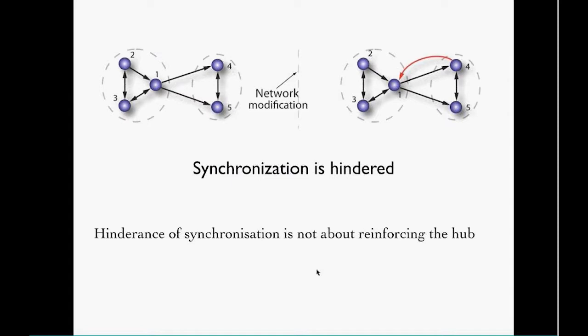When we first found this, we started chatting to people. The first thing they thought was this is happening because I'm reinforcing the hub—basically linking to the hub. We tried to prove this but didn't manage. We did a large-scale simulation and found that this is not the case. You can have networks with hubs, and when you try to reinforce the hub this does not happen.